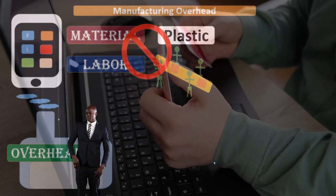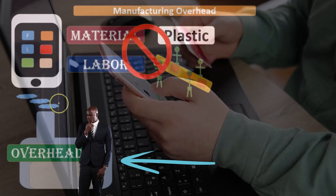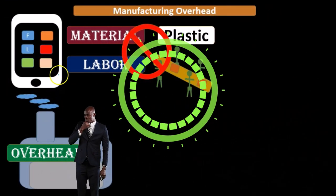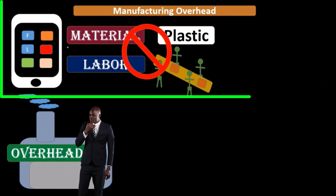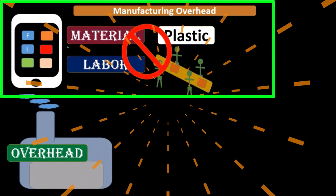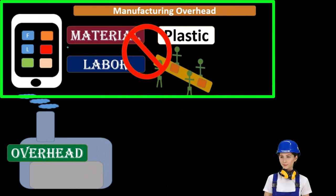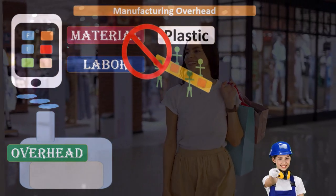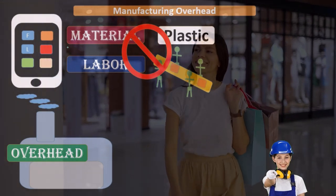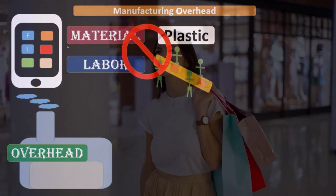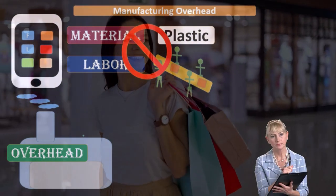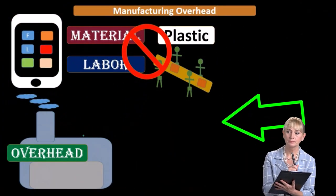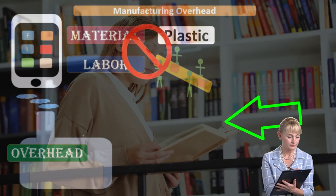Everything that we cannot apply directly to the tablet — as we can with direct materials and direct labor — will go into overhead. Why is that necessary? Because we want to have the cost per tablet in some way. We can apply direct material and direct labor directly to that particular item, that particular inventory, that particular job or process. But the things we put into overhead are everything else. It's the bucket — that's everything else. That's why the definition defined it as what it's not.